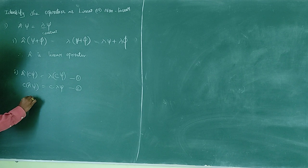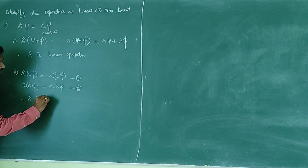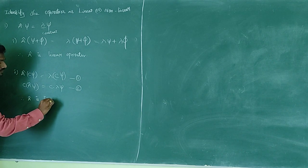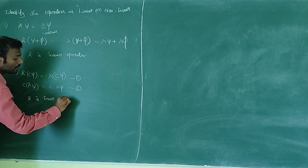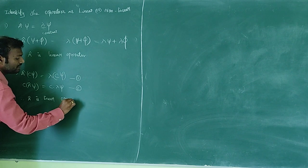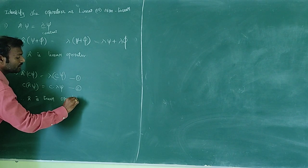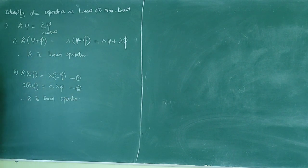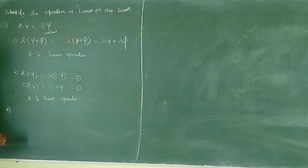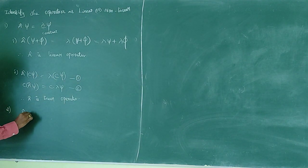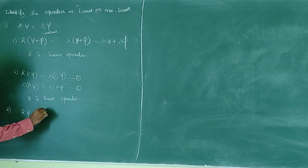So we tried two methods and confirmed A-cap is a linear operator. Now the second question: A-cap(ψ) equals ψ-star — the complex conjugate of ψ. What do we do with this?